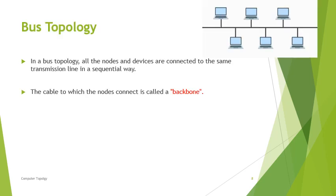In bus topology, all the nodes and devices are connected to the same transmission line in a sequential way. This transmission line is called the backbone of the network.